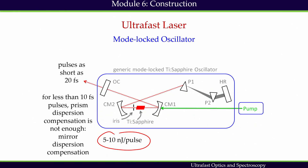We are continuing module 6. In this module, we are discussing construction of ultrafast lasers. In the previous slides, we have already understood different elements used in the laser oscillator: dispersion compensator given by 2 prisms, high reflector, self-mode locking done by the aperture and gain medium, and the laser cavity with the help of 2 mirrors and the output coupler.